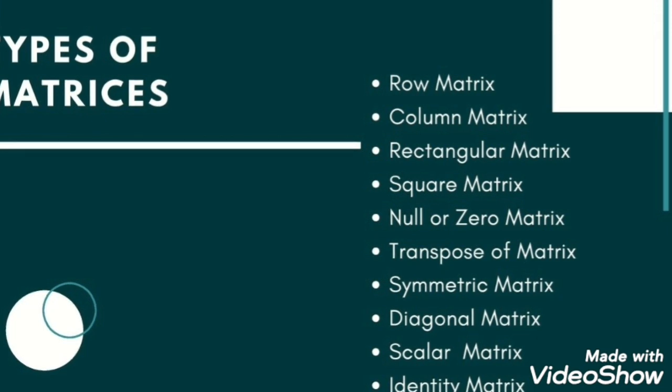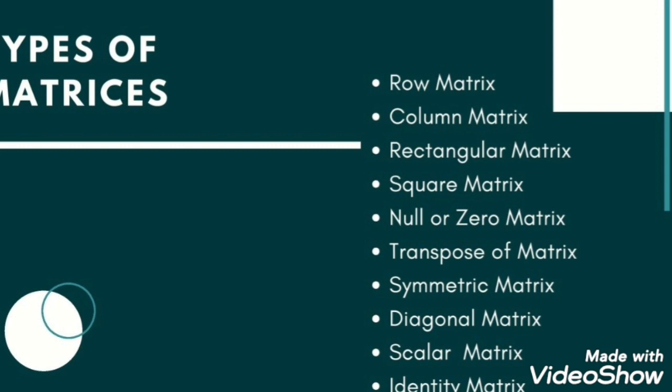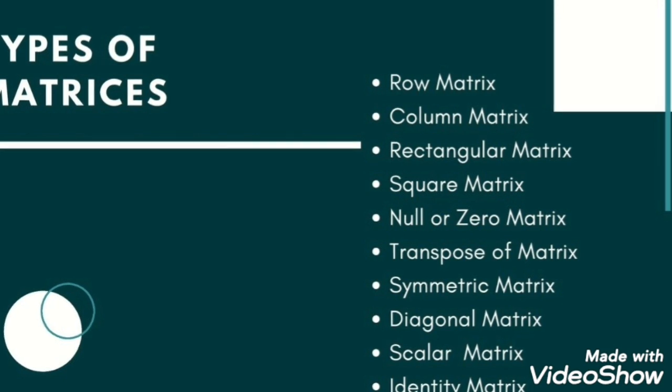Symmetric, diagonal, identity, and scalar matrices - these are all subtypes of square matrix.